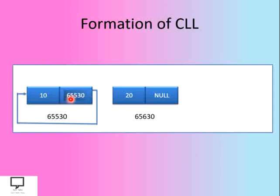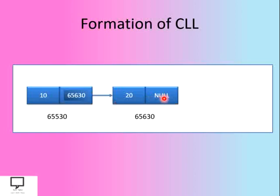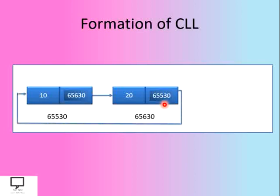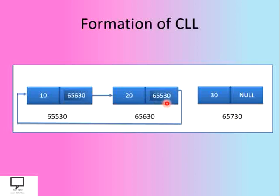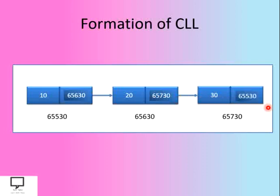Now let's add one more node to the CLL. The first node's next field, instead of pointing to itself, will now hold the address of the new next node. This removes the self-circular link and forms a forward link from the first node to the next node. The last node's null is replaced with the address of the first node to form a circular link. Adding a third node follows the same pattern: link it to the next node and replace its null with the address of the first node.